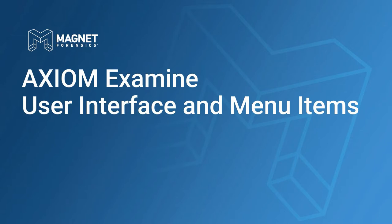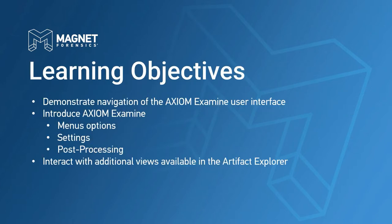In this video, we'll examine the Axiom Examine user interface and menu items. We'll take a look at the different menu options available in Axiom Examine for both Magnet Axiom and Axiom Cyber. We'll also review the settings available in Axiom Examine along with post-processing options, media categorization capabilities, and Magnet AI options. Additionally, we'll take a further look at some of the views available within the Artifact Explorer that were first introduced in an earlier video.